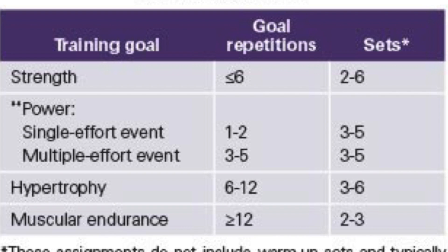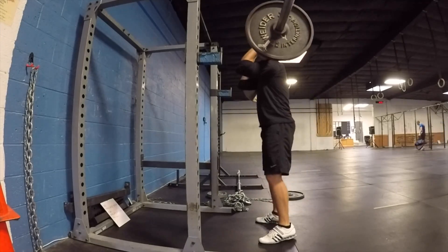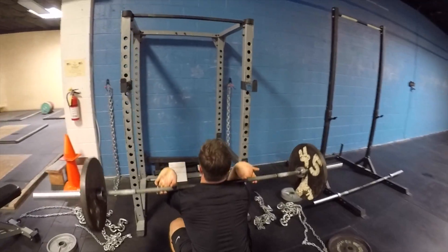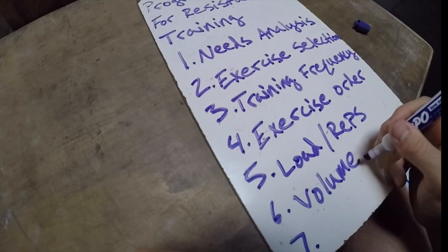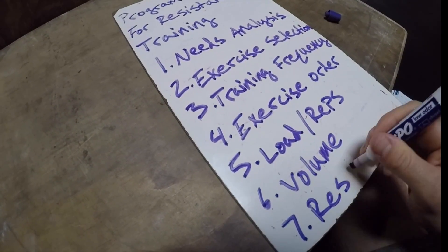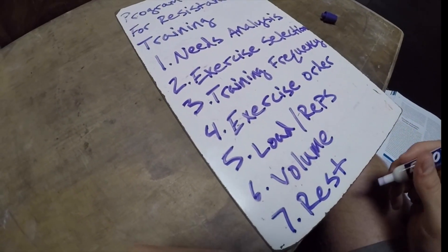For warm-up sets, roughly three to five warm-up sets is appropriate. You could have them go from reps of five, three, one, and then start hitting their prescribed working sets. Just remember the relationship between intensity and volume — you do not want to overtrain your athlete.